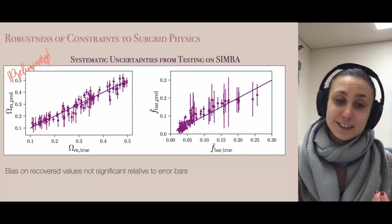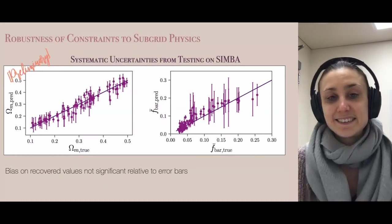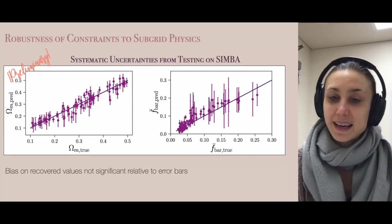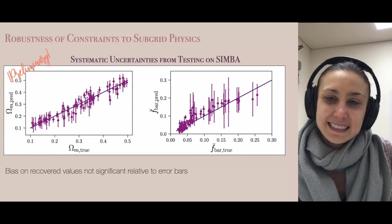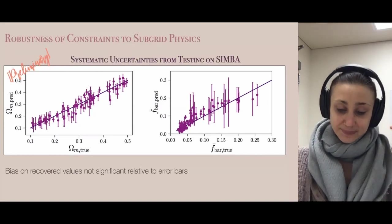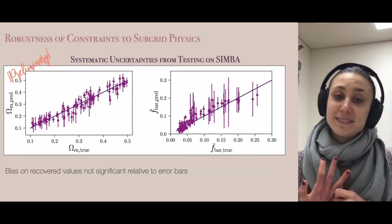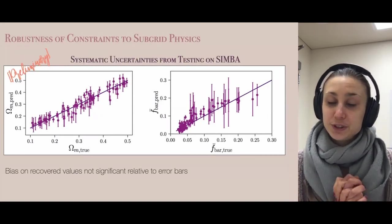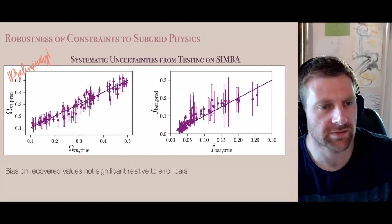If we successfully predict both Omega_m and f_bar on SIMBA using our IllustrisTNG-trained model, this means our constraints are robust to changes in subgrid modeling. If we detect biases, they provide a measure of systematic uncertainties. The results show the network does a pretty decent job at recovering f_bar and Omega_m on SIMBA, which means the electron density power spectrum appears to be a promising probe to jointly constrain cosmology and baryonic feedback, and is robust to changes in subgrid modeling as spanned by IllustrisTNG and SIMBA.